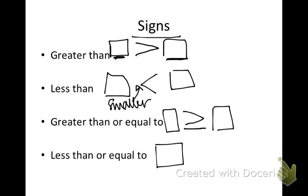I can also use greater than or equal to. I'm going to use my greater than sign and put part of the equal sign below it, showing the first number on the left is greater than or equal to the number on the right. I can also use less than or equal to — the less than sign with part of the equal sign — showing that my number on the left is less than or equal to the number on the right.